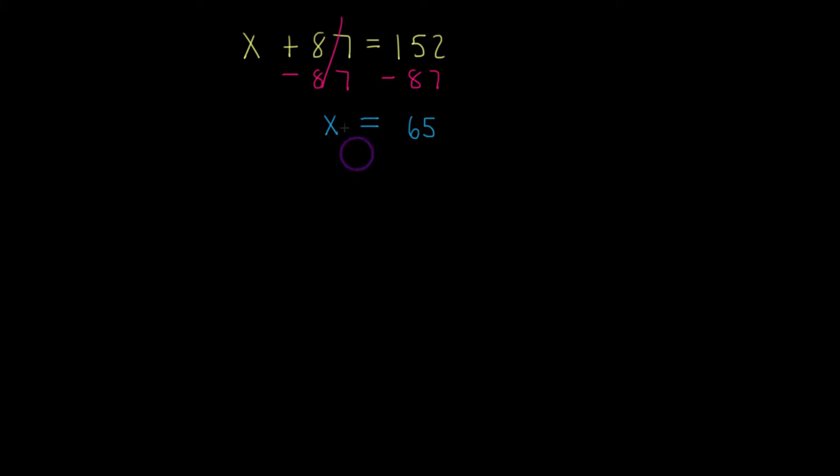Now I could box this up, but I'm not sure that it's correct. Maybe I made a miscalculation. So there's a surefire way of checking your work. Substitute the value back in for the variable x in this case. So I'm going to rewrite this as 65 plus 87 is equal to 152.